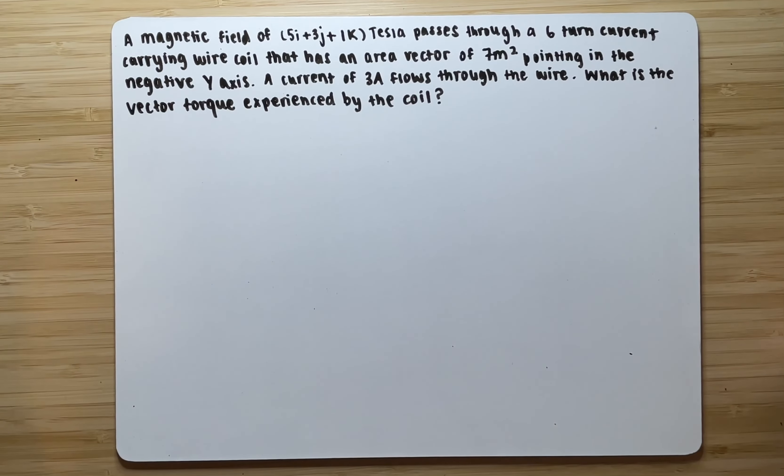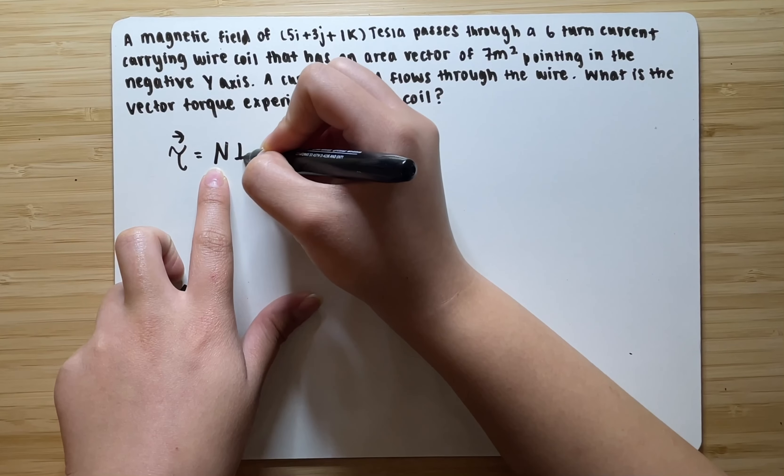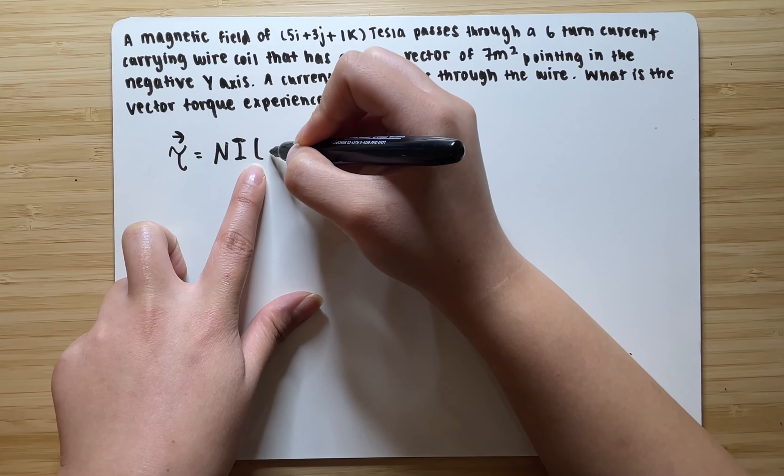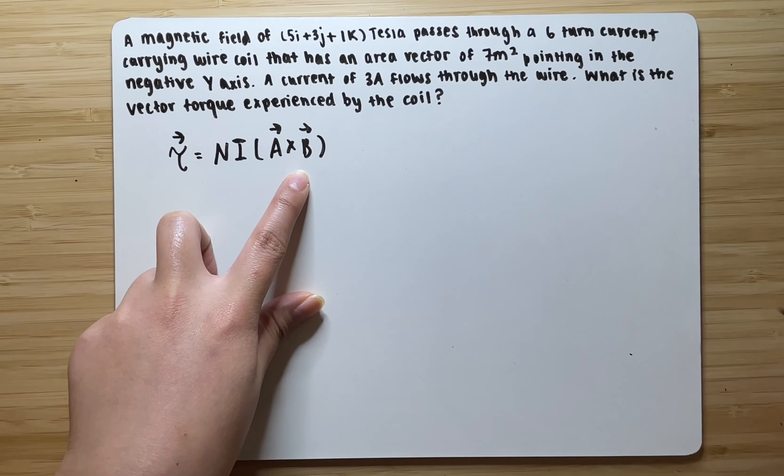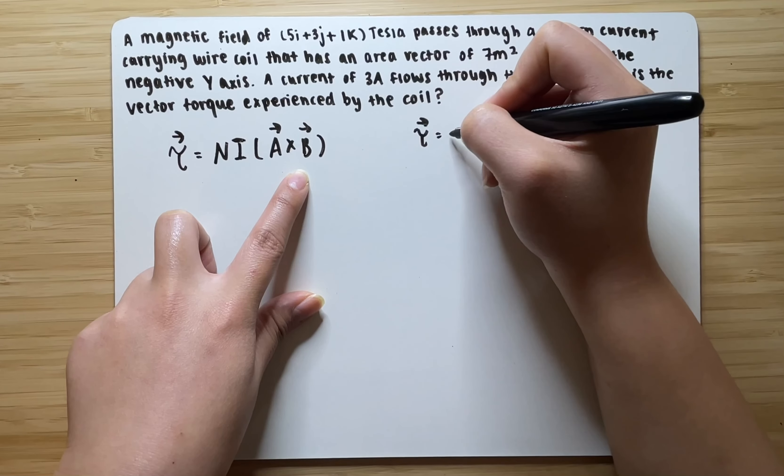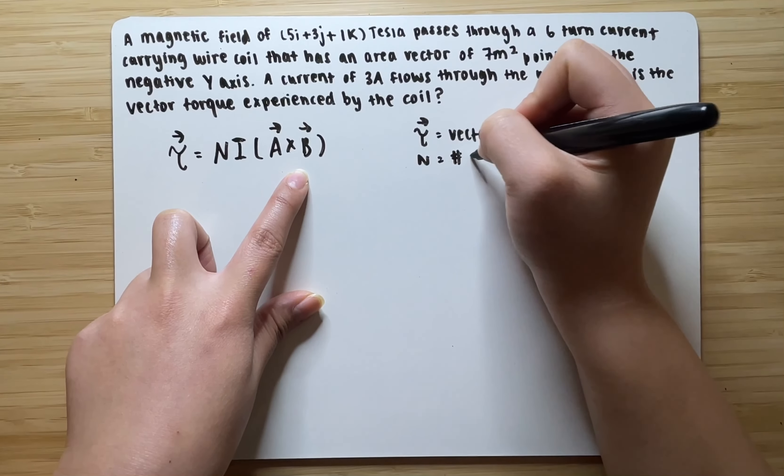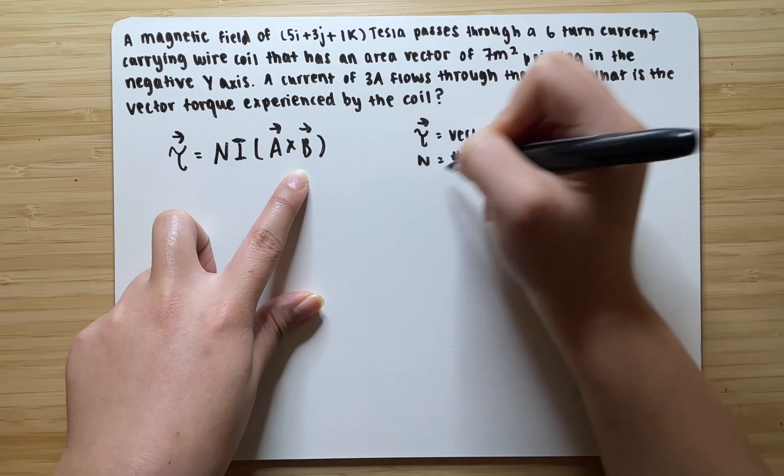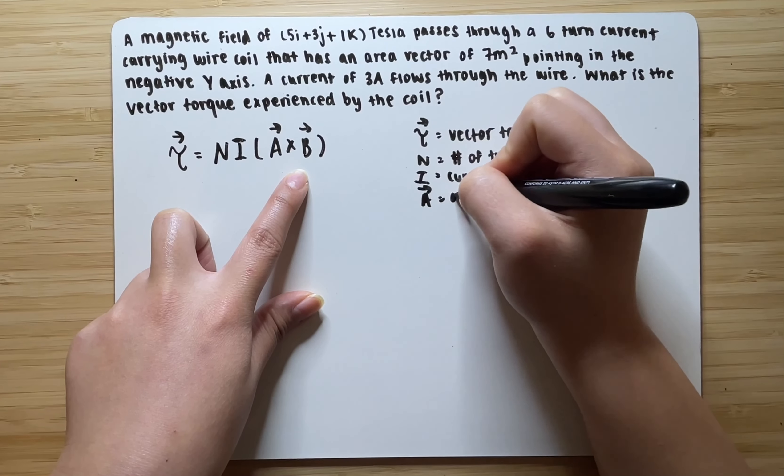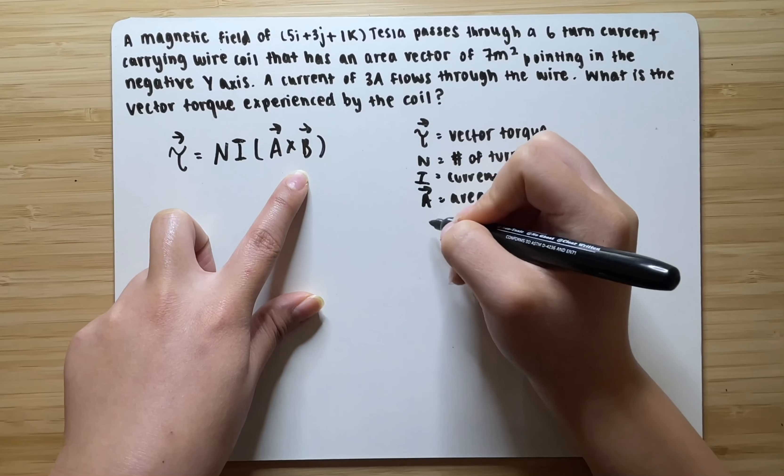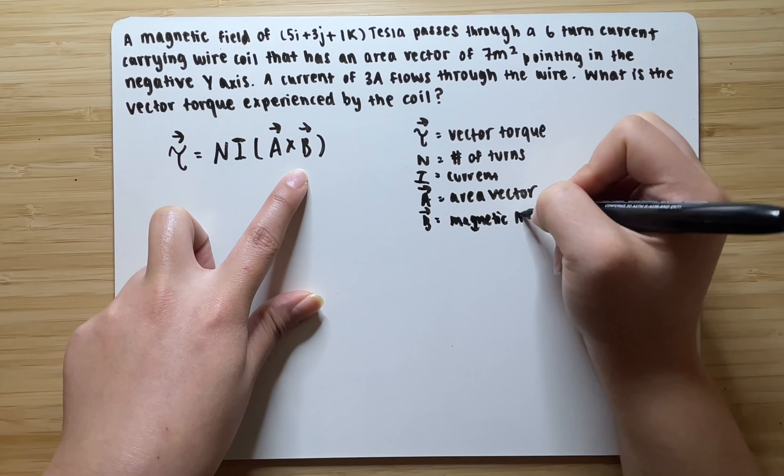Whenever you're given a problem that asks for vector torque, you want to remember that the formula for vector torque is equal to N, that stands for number of turns, times I for current, multiplied by the cross product of the area vector and the magnetic field vector. So I'm going to write it over here. T is for vector torque, N is for the number of turns, I is for current, A is for area vector, and B is for magnetic field vector.